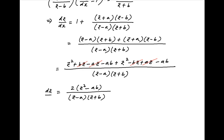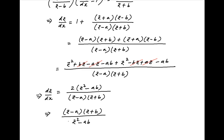And this is equal to the left hand side, which is equal to dz upon dx. Separating the variables, this becomes z minus a times z plus b divided by z square minus ab dz is equal to 2 dx.